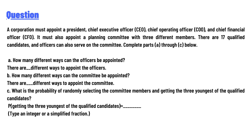It must also appoint a planning committee with three different members. There are 17 qualified candidates, and officers can also serve on the committee. Complete parts a through c below. Part a: How many different ways can the officers be appointed?